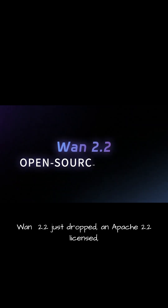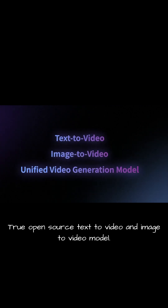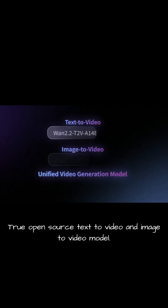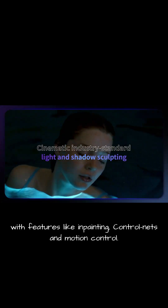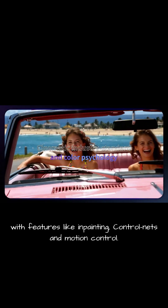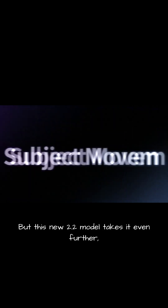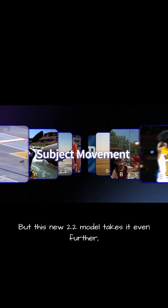WAN 2.2 just dropped — an Apache 2.0 licensed, true open-source text-to-video and video-to-video model. The previous WAN 2.1 was already powerful with features like in-painting, control lights, and motion control. But this new 2.2 model takes it even further.